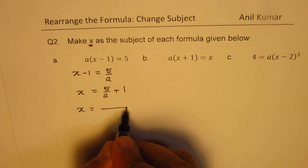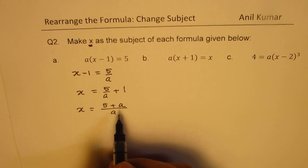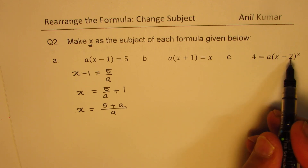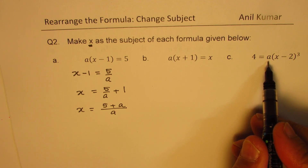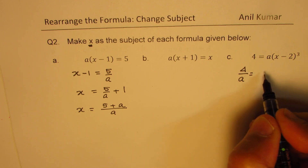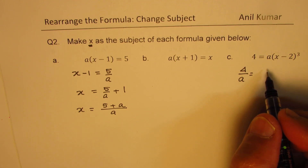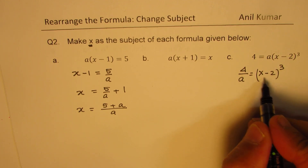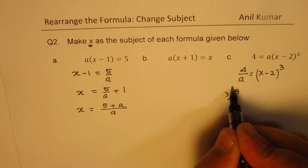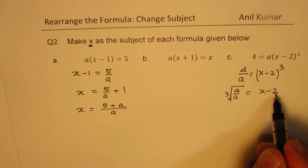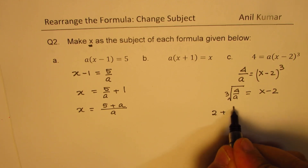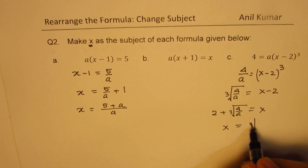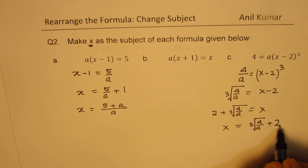At times you could also write this as 5 plus A over A, but that is not really required. For the last example, part C, we have 4 equals to A times (X minus 2) cubed. First, divide by A: 4 over A equals to (X minus 2) cubed. To get this expression, take the cube root of 4 over A, giving X minus 2. Adding 2, we get X equals to 2 plus cube root of 4 over A.